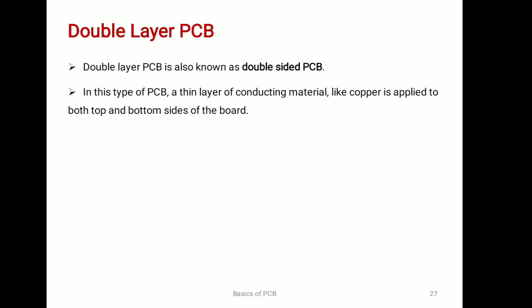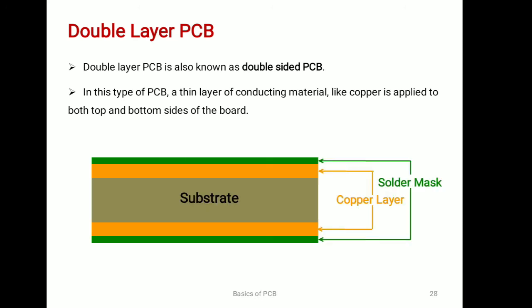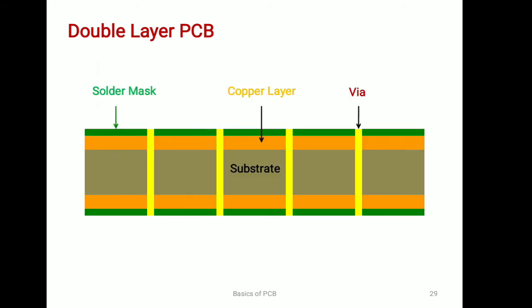Next is double layer PCB. These are also known as double sided PCBs because a thin layer of conducting material is applied on both the top and bottom side of the board. The conductivity between both layers is provided through a VIA, which has two pads in corresponding positions on both layers and are electrically connected by a hole through the board. We can see in the diagram that a layer of copper and solder mask is applied on both sides of the substrate, and the VIA in yellow color is used to connect both layers. This type of PCB is used in industrial control, converters, phones, power monitoring systems, etc.